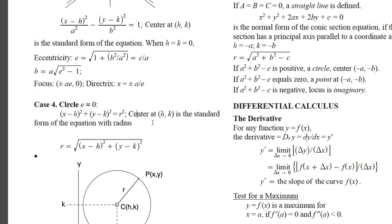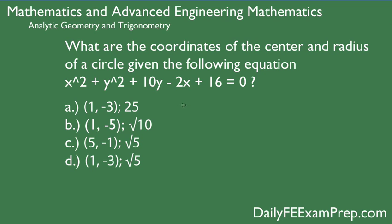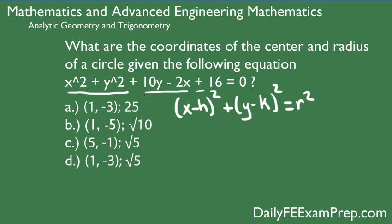This is the standard form of the equation with the radius, and the radius is given as the square root of x minus h squared plus y minus k squared. So make sure you have that formula handy. We need to get the given equation into binomial form because we want to find the coordinates of the center. We need to get them into identical binomials in the x minus h squared format.